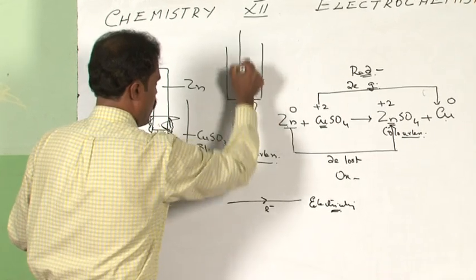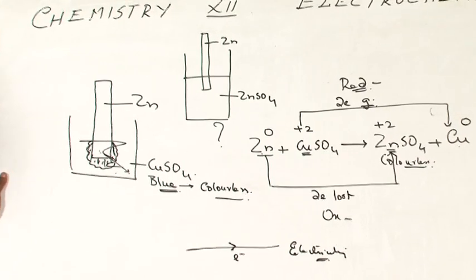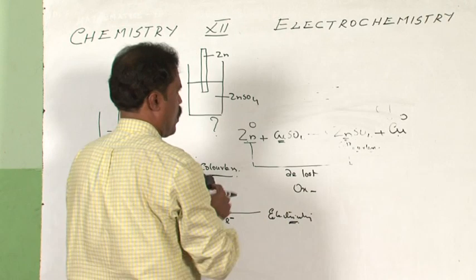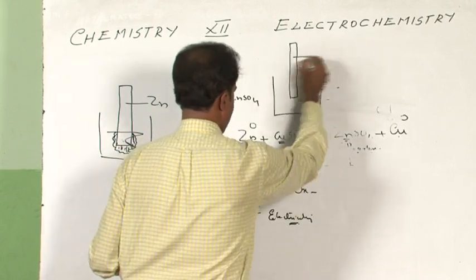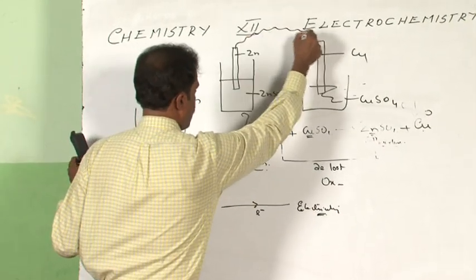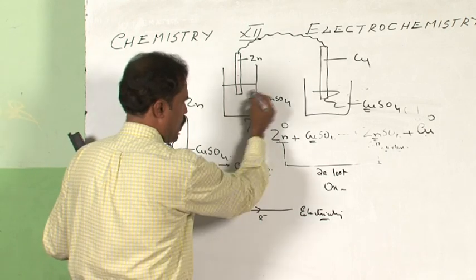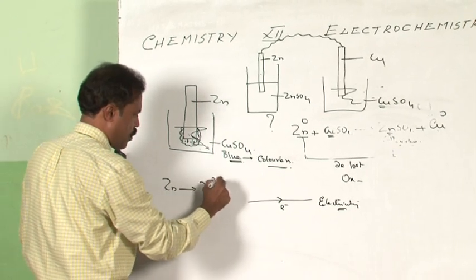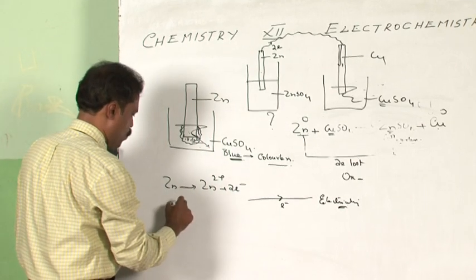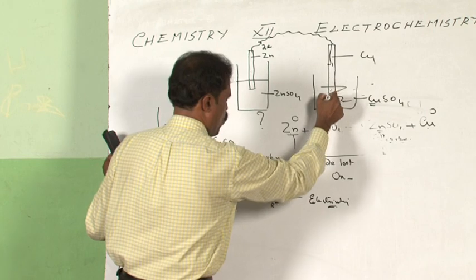If you put a piece of zinc in zinc sulfate, nothing will happen because zinc is in zinc sulfate solution. Similarly, if you put copper in copper sulfate solution, there will not be any change either. But the moment you connect them, we have effectively put zinc in copper sulfate indirectly. So zinc will start giving out electrons, becoming Zn²⁺ ions, and those electrons will move through the wire to the other compartment where Cu²⁺ accepts them to become copper.